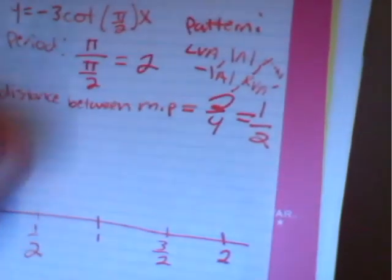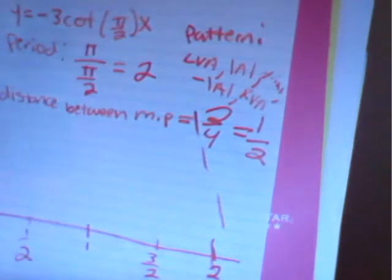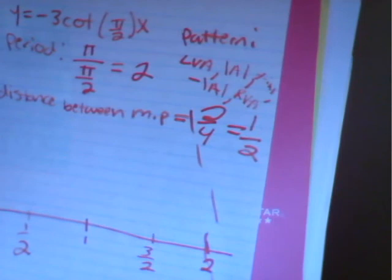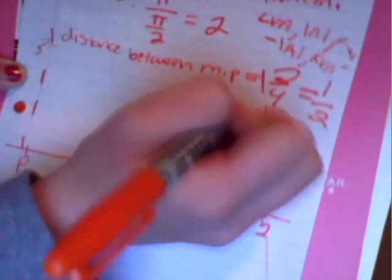We are going to have a left vertical asymptote at 0, and a right vertical asymptote at 2. Then we are going to have our absolute value of a, which is going to be right here, and then we are going to have our x-intercept, and then our negative absolute value of a.